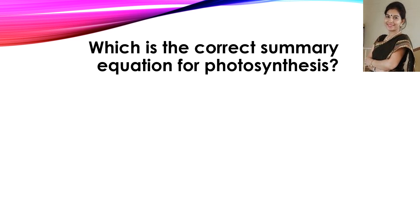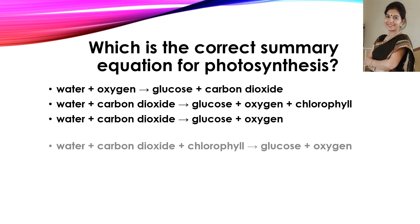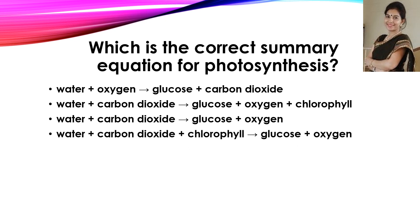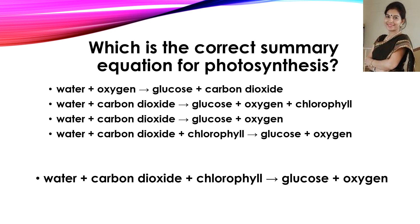Now the next question: which is the correct summary equation for photosynthesis? These are the different equations — you have to find out the correct one. The correct answer is: water combines with carbon dioxide in the presence of chlorophyll to produce glucose and oxygen.